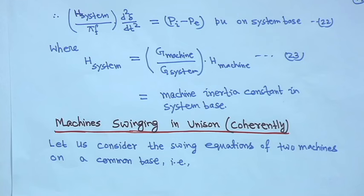For a multimachine system, when a group of generators operate in parallel and swing in unison — that is, they are in a coherent group — their increase or decrease in speed will be the same. This is sometimes called coherency. We will come back to that. Thank you.